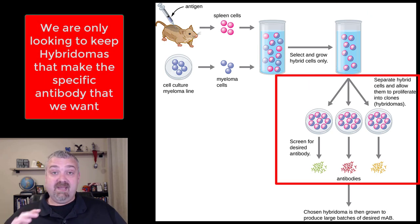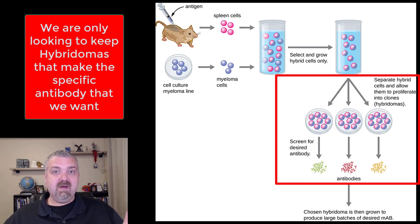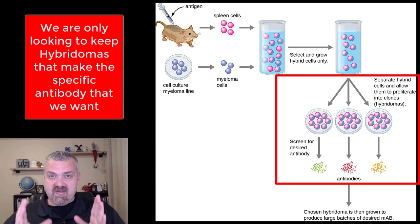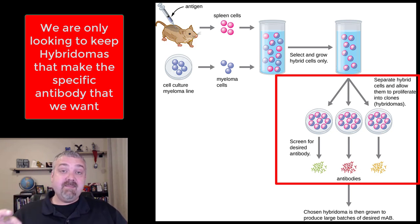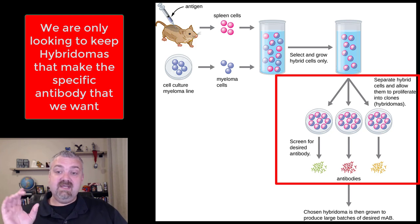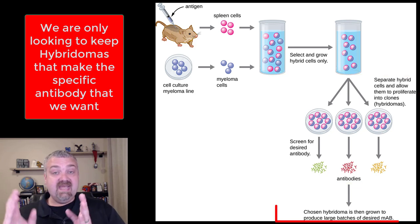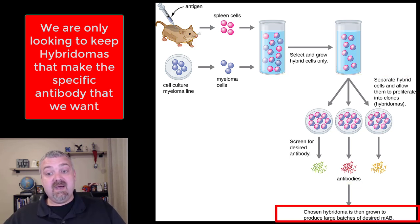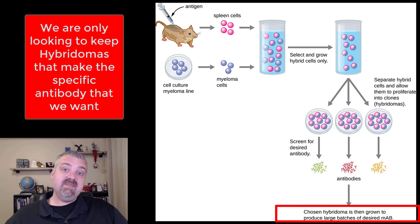The next step is to separate them and find the hybridomas making the antibodies that we want. We don't care about other antibodies this mouse was producing — we want whichever specific antibody we're going after. So you separate these hybridomas and find the ones that are producing desirable antibodies. Let's say it's the dish in the middle producing those red antibodies. You take that hybridoma making the antibodies you want and keep it in an environment where it's going to keep churning out large batches of these antibodies.